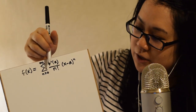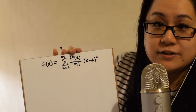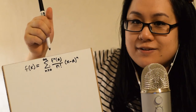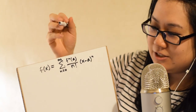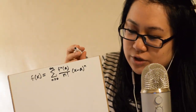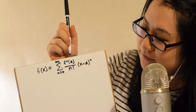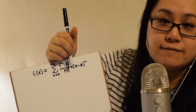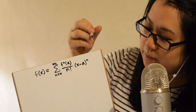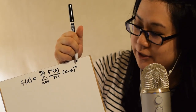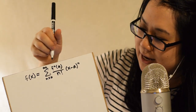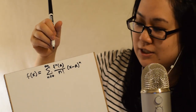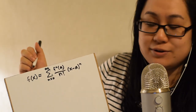That nth derivative is divided by n factorial, times x minus a to the power of n, and we are indexing n from zero to infinity. So it's an infinite sum — n is zero, then one, two, three, four, five and so on. Notice we have an nth derivative, n factorial, and a power of n — those are the three n's we keep increasing.